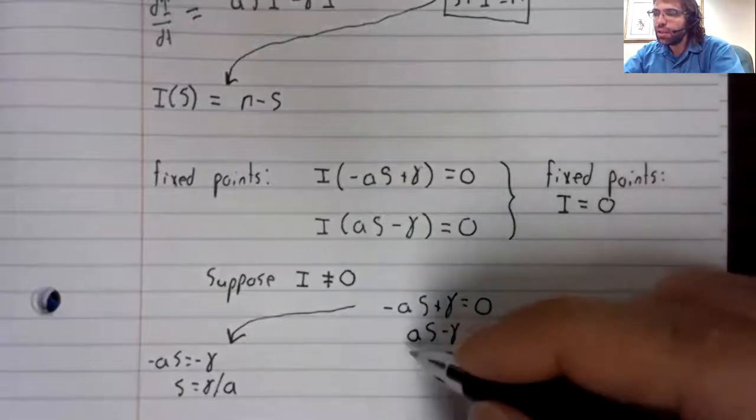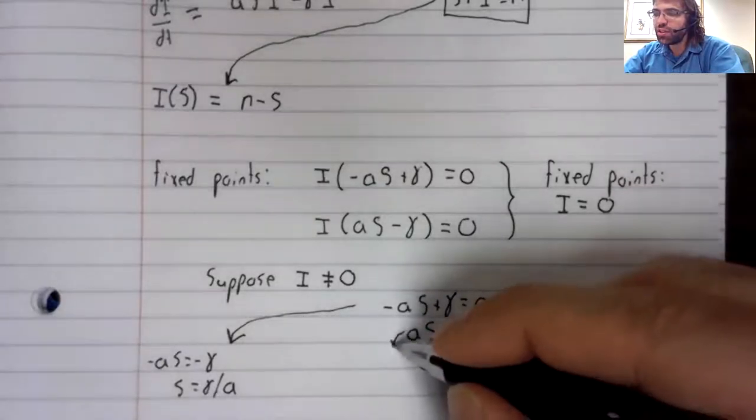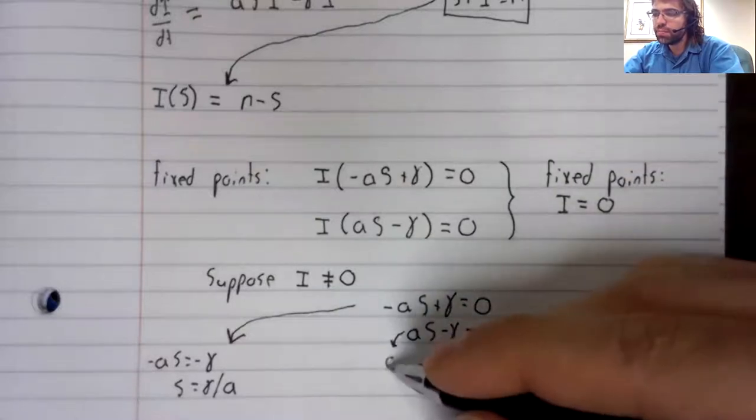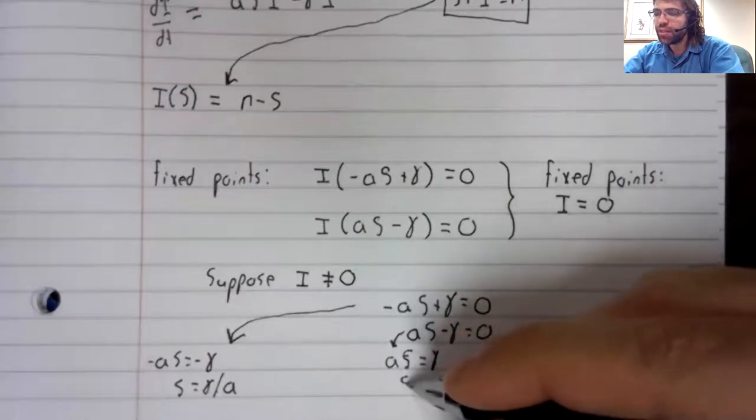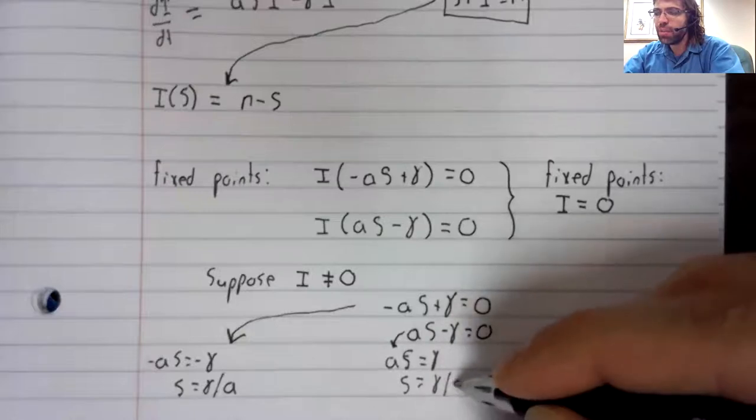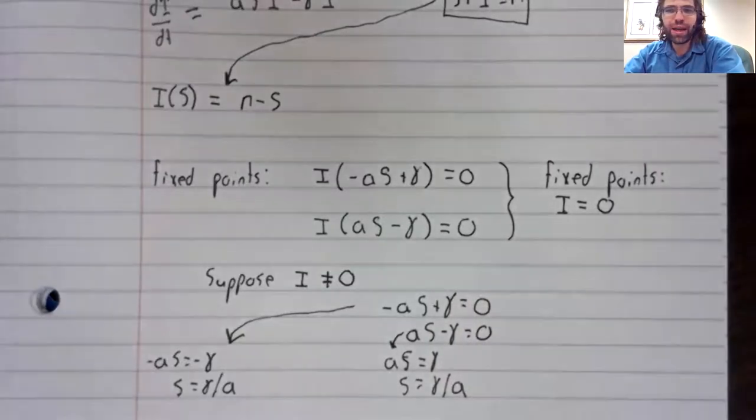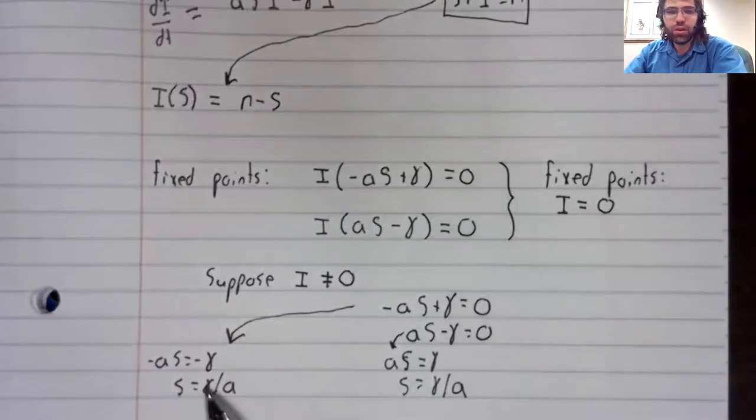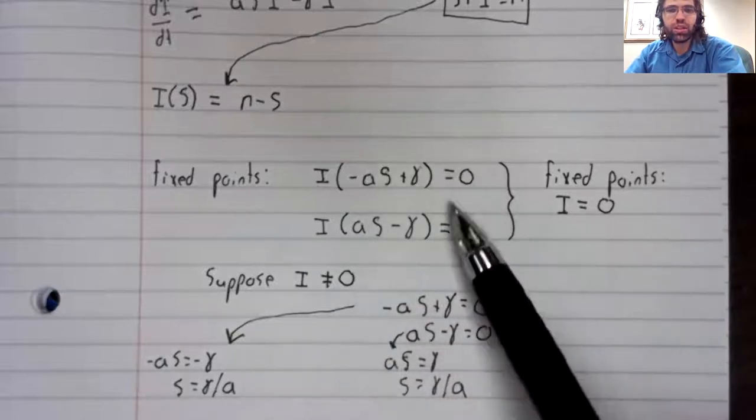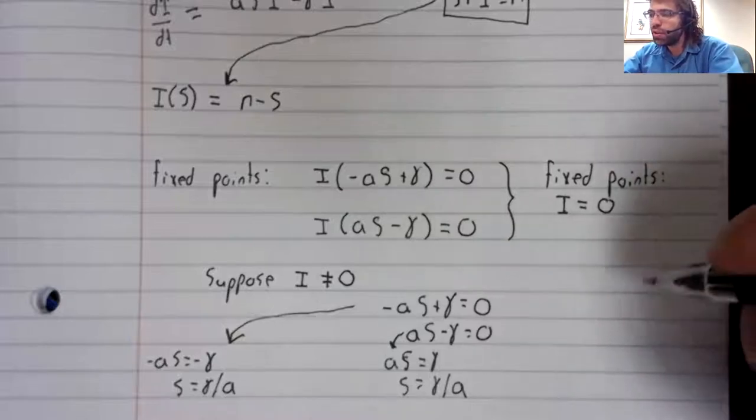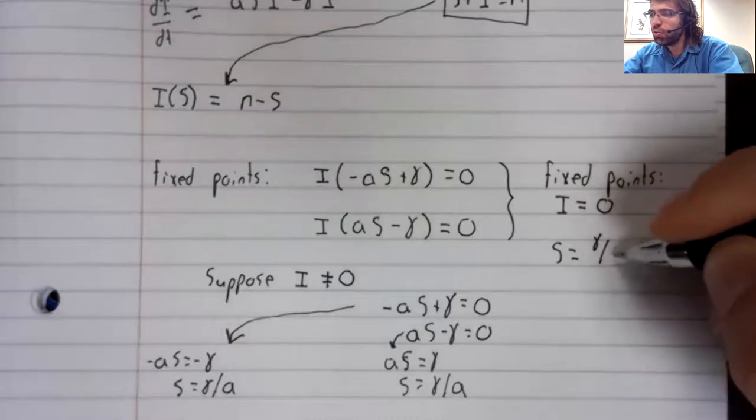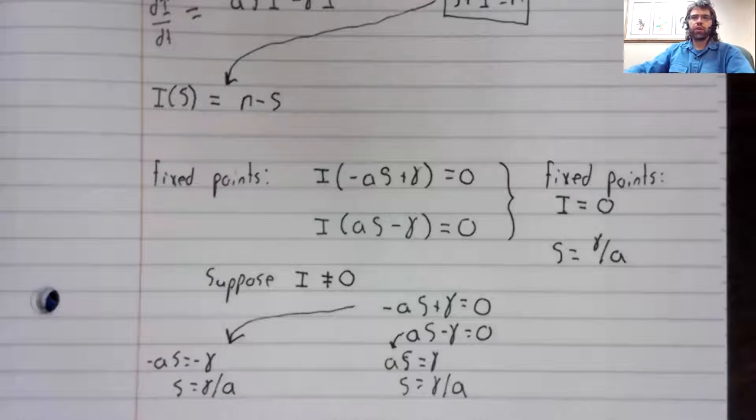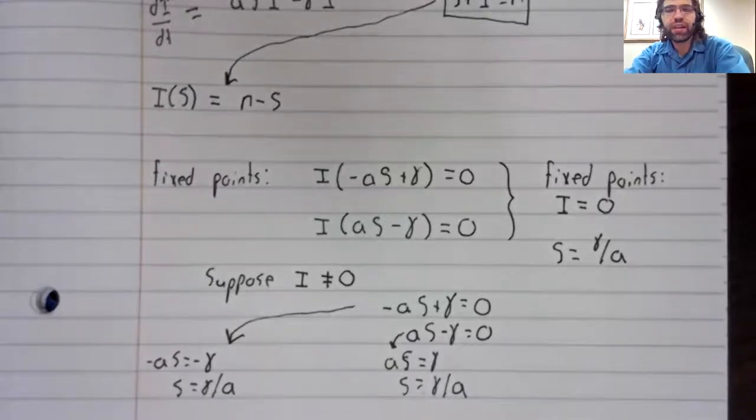And if you solve the second equality, AS equals gamma, S equals gamma over A. So this equality also makes both these equalities true. So we have a horizontal and a vertical line of fixed points.